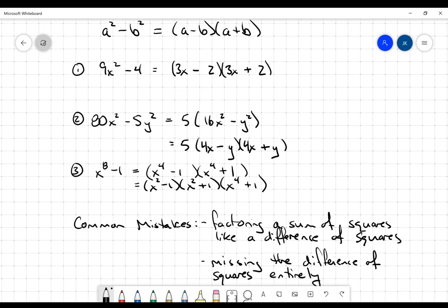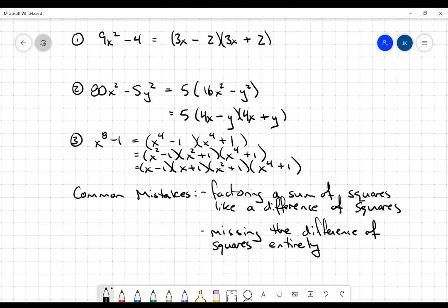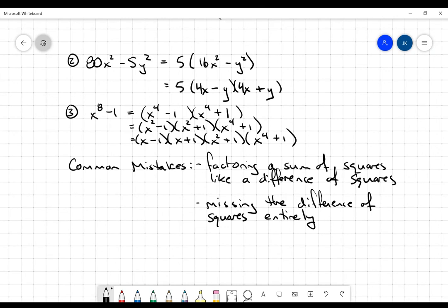But now look at this again. We've got this x squared minus 1 at the very beginning, and that is also a difference of squares. And so that becomes x minus 1, x plus 1. Again, x squared plus 1 is not a difference of squares, so that's as far as I go. And x to the 4th, once again, is not a difference of squares. So that is as far as I go. And so that's what difference of squares factoring sort of looks like.